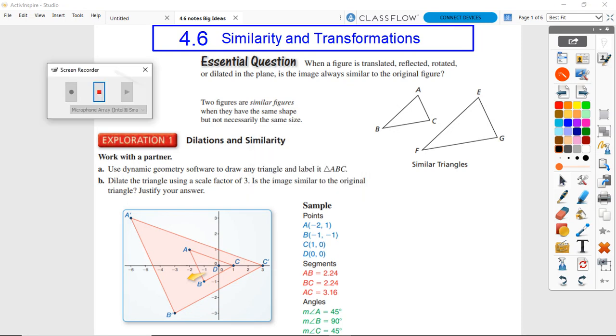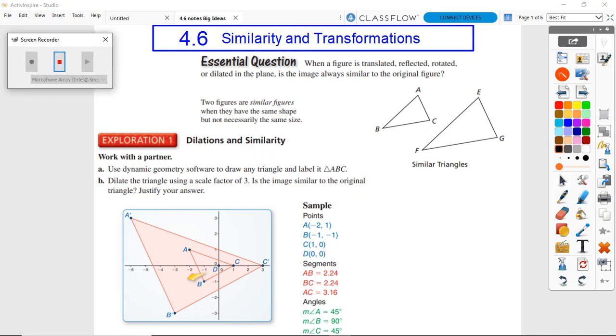Hey party people, 4.6 similarity and transformations. Welcome as we go through a couple nifty new things. I've got something old and something new for y'all tonight. The old stuff is the things we've been working on - we're going to dilate, rotate, translate, reflect.